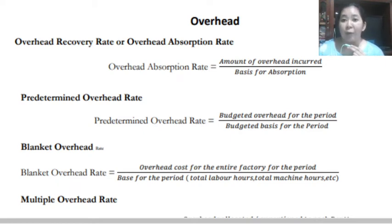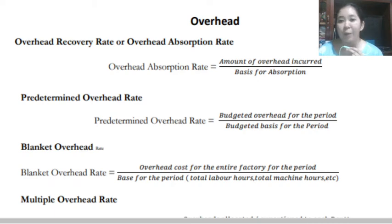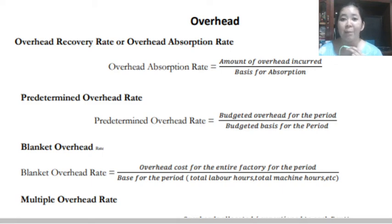We also have the predetermined overhead rate. This is the standard or planned overhead rate that the entity estimates it should incur in the next accounting period. This will later be compared with the actual overhead expense incurred during the year, and any difference gives us the variance. The formula for the predetermined overhead rate is: budgeted overhead for the period divided by the budgeted basis for the period. We can use the number of units produced or the number of hours worked in production as the basis.